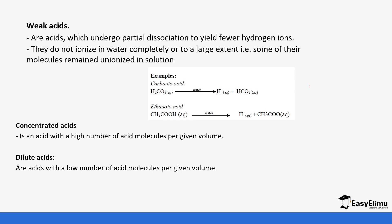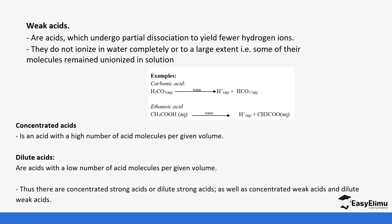Weakness and strength of an acid refers to how they dissociate, while concentration and dilution refers to how many particles are in a given volume of water. We can have a concentrated weak acid — very concentrated but still not fully dissociating. We can also have a very strong acid that is dilute but still dissociates fully. So there are four combinations: concentrated strong, dilute strong, concentrated weak, and dilute weak acids.